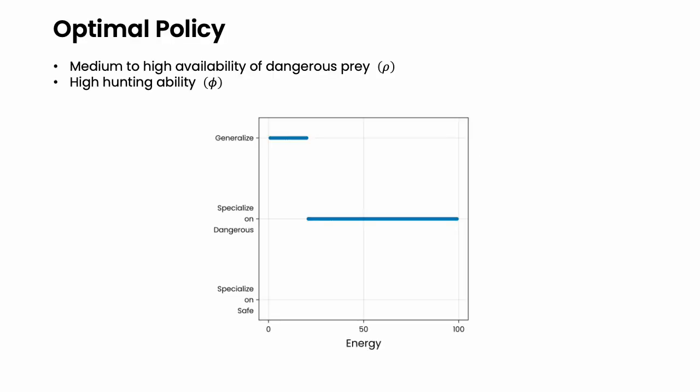Here is an example of an optimal policy, where on the x-axis is the energy and on the y-axis are the actions or strategies taken by the individual. Below a certain energy level, it is best to generalize—that is, to attack all prey that it encounters. But above this threshold, it is optimal to specialize only on dangerous prey.